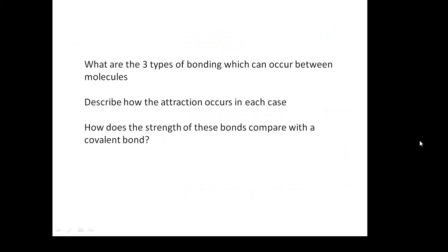Here are some questions for you to do. What are the three types of bonding which can occur between molecules? Describe how the attraction occurs in each case. And how does the strength of these bonds compare with a covalent bond?